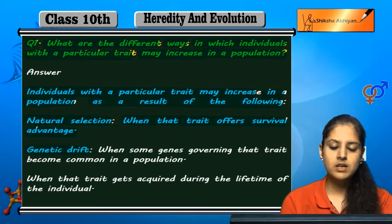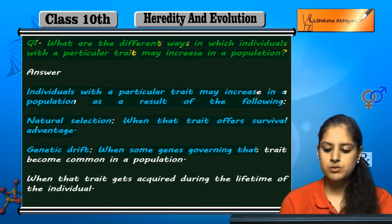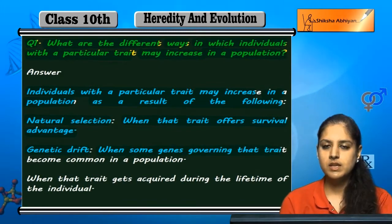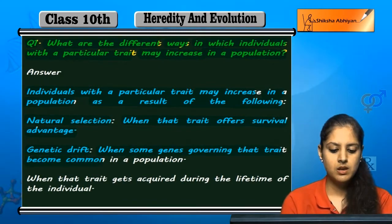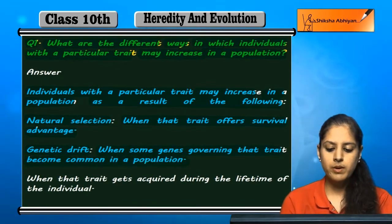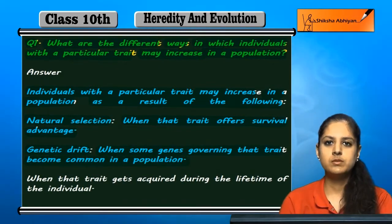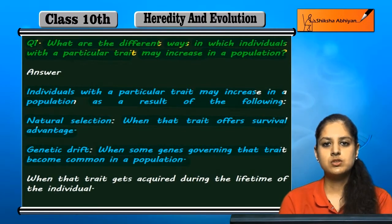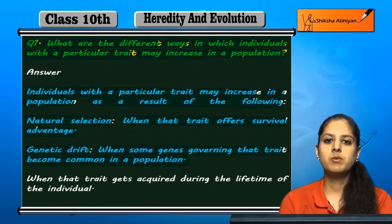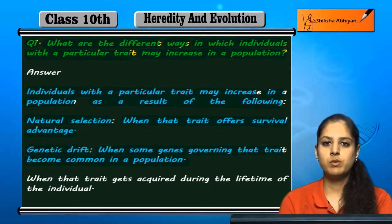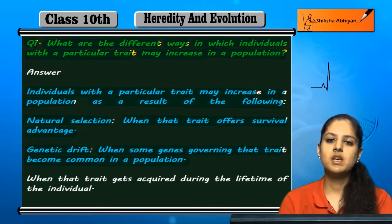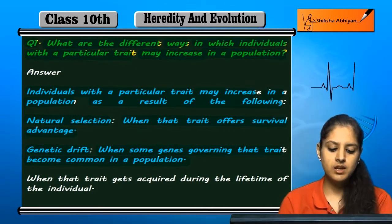The second way is genetic drift, when some genes governing that trait become common in a population. If the trait present in the genes is common in the population, it can increase in this way.